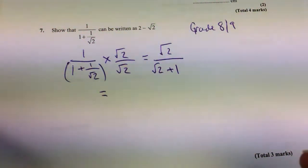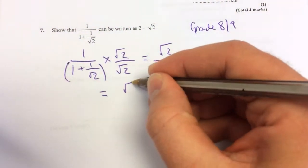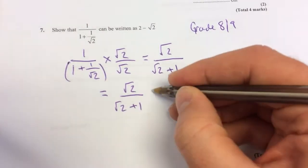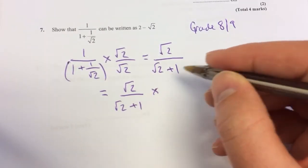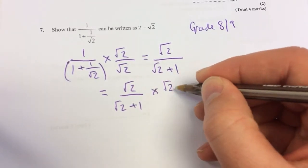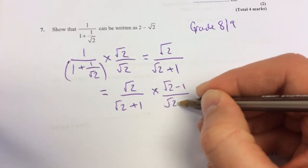Like difference of two squares where there's that minus sign. So you do root 2 over root 2 minus 1 times root 2. That's the original, and then you times it by root 2 minus 1 over root 2 minus 1.